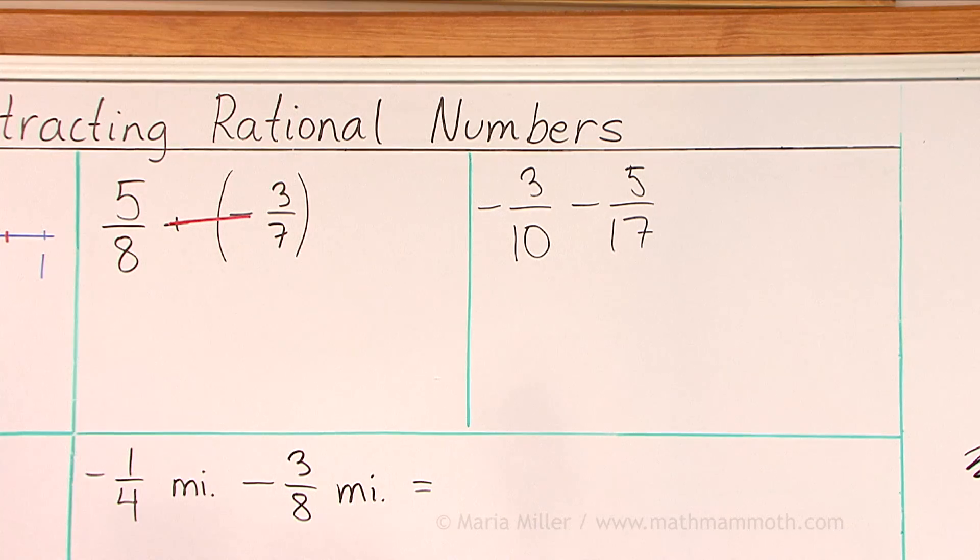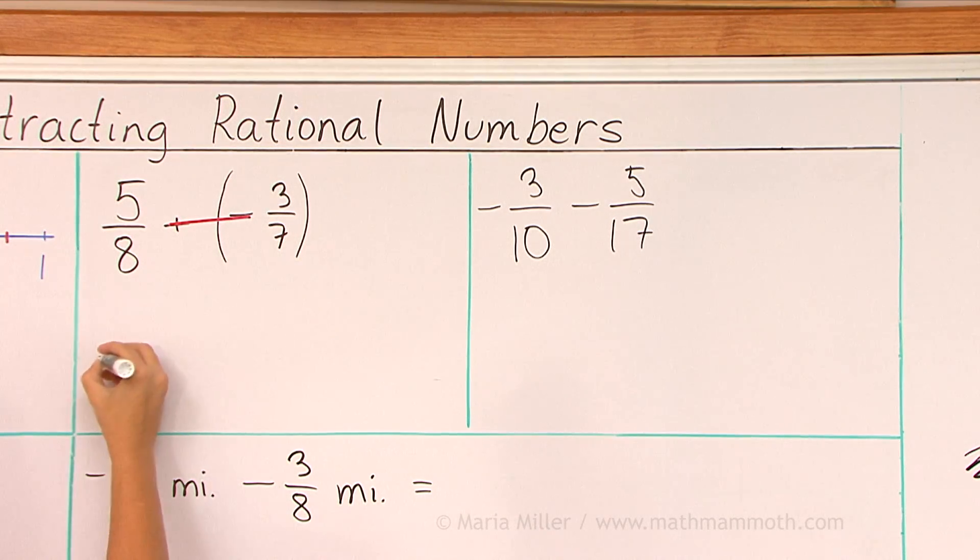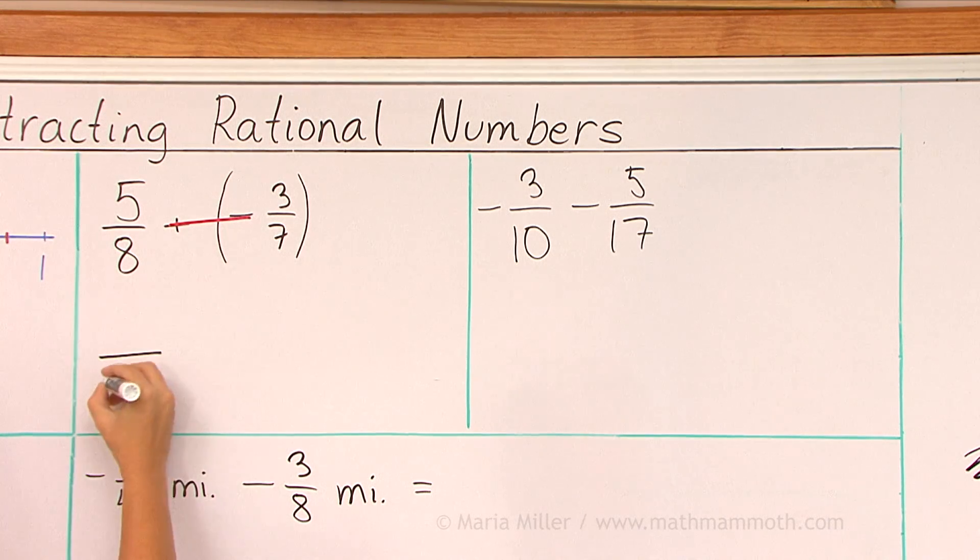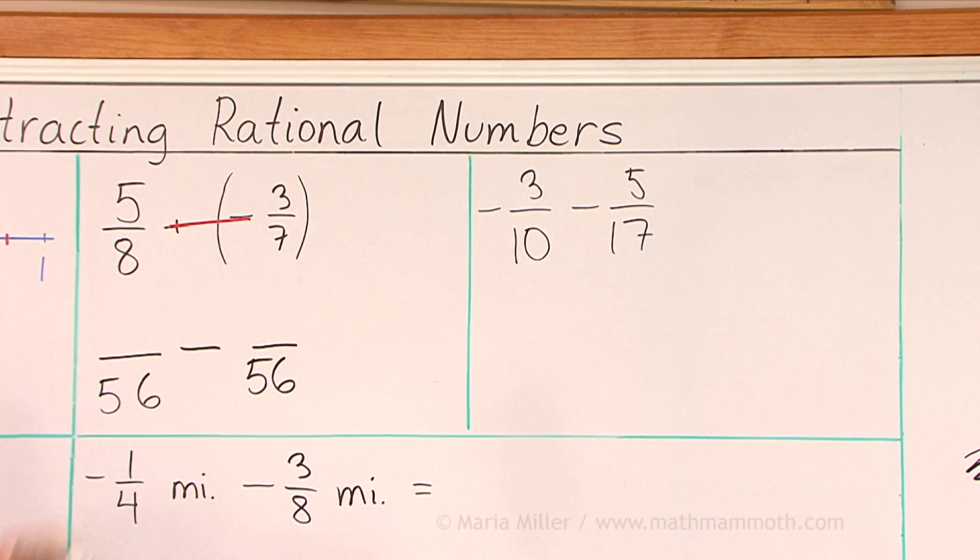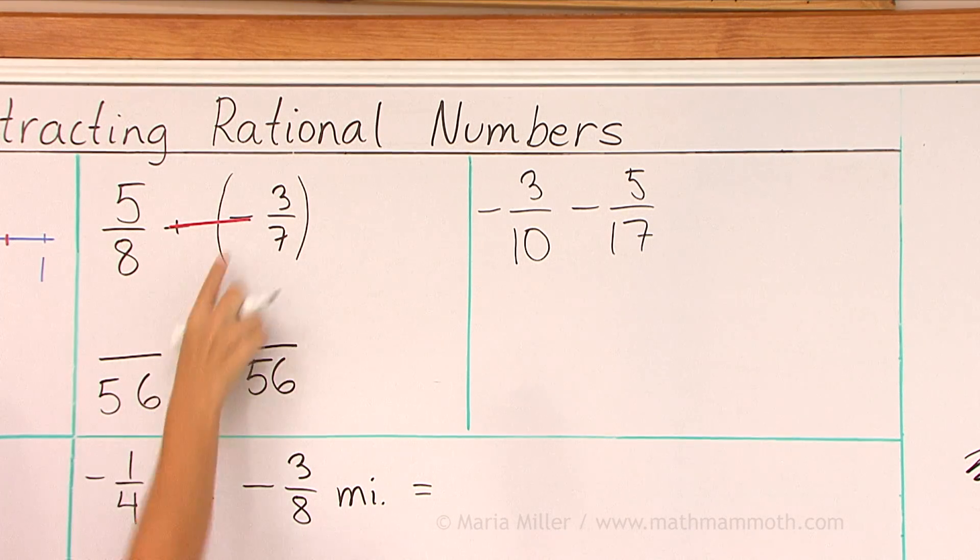So it's five-eighths minus three-sevenths. Looks simpler. And now we will need a common denominator, which for eight and seven, we use fifty-six. And there's going to be minus between them.